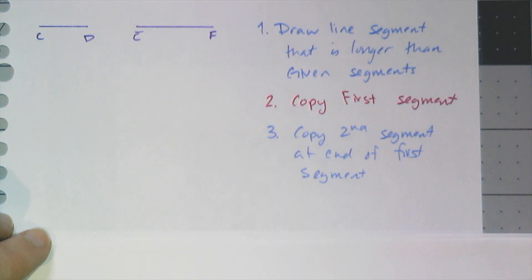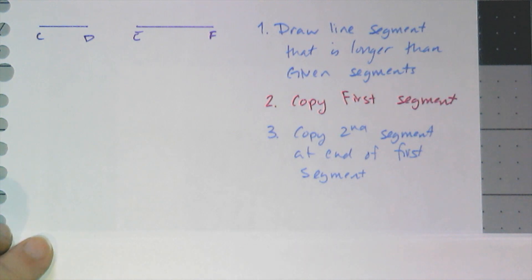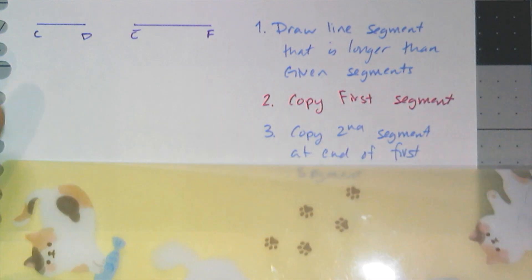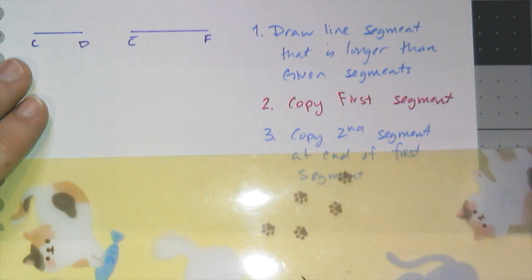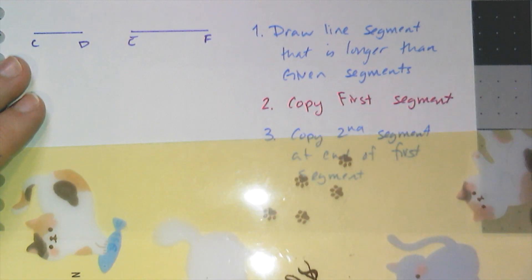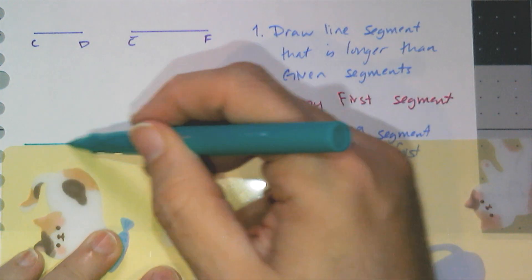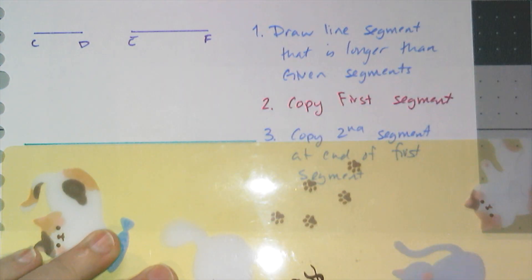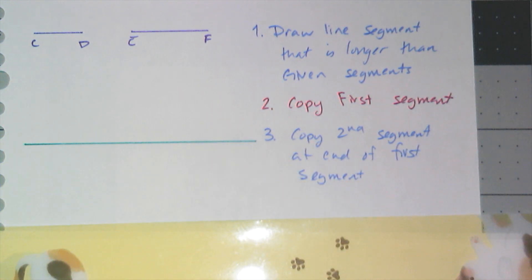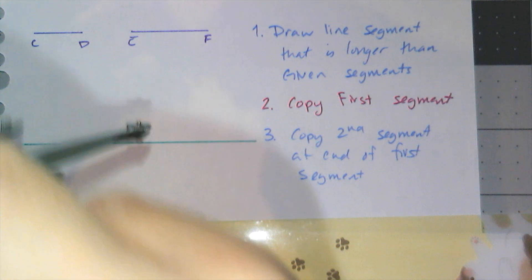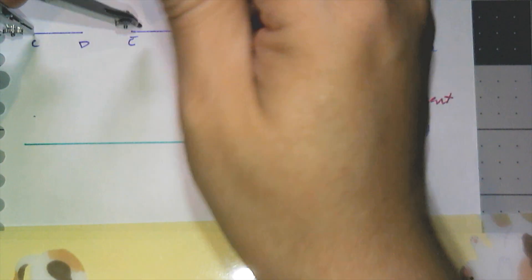Now we're going to talk about how to add two lengths together, and this is a legitimate method of addition — it's very old school though. First I'm going to start by drawing a line segment that is longer than the segments I've been given, at least both of them combined visually. Then I'm going to use my compass and act like I'm copying the line segment, starting with CD.